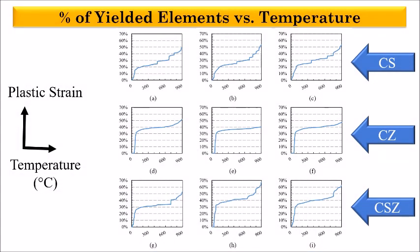Cumulative percentage of yielded elements throughout the heating simulation can be extracted and plotted versus temperature. Notice that in CZ and CSZ simulations which have higher volume fraction of zirconia inclusions, roughly 30 percent of the elements have yielded at temperatures lower than 100 degrees centigrade whereas CS simulations show a more gradual trend of yielding.